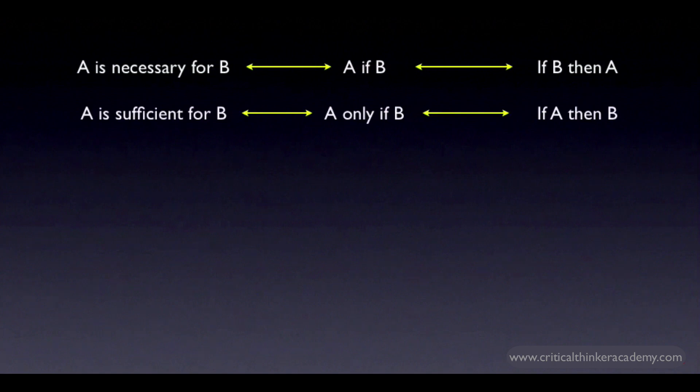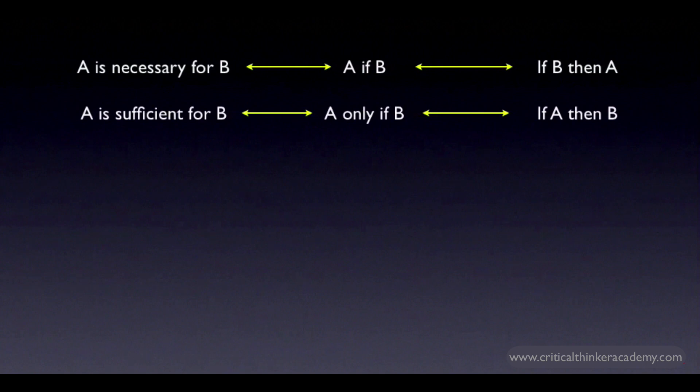Finally, I want to draw attention to the parallels between the language of necessary and sufficient conditions and the language of "if and only if." These function in exactly the same way. Both emphasize that a conditional relationship only goes one way, and that if you can establish that both are true, then you've established a biconditional relationship: if A is true, then B is true, and vice versa.